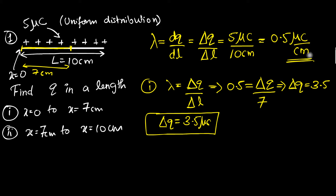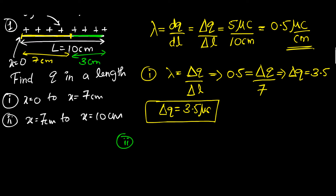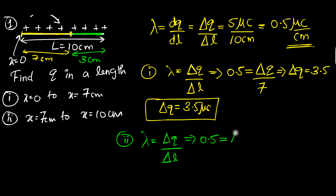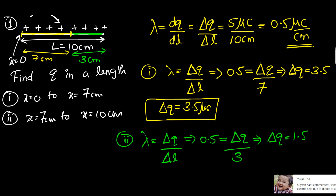Now let's solve the second problem. We need to calculate the charge present from 7 to 10 centimeters — that's a length of 3 centimeters. Using the same formula: λ = ΔQ / Δl, where λ = 0.5 regardless of where we choose our section. So 0.5 = ΔQ / 3, giving ΔQ = 3 × 0.5 = 1.5 microcoulombs.